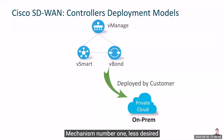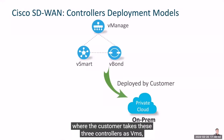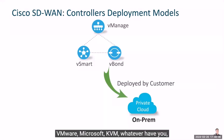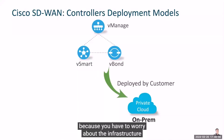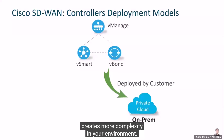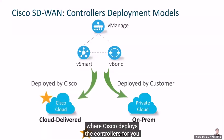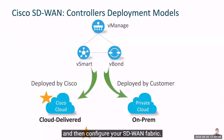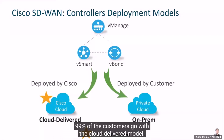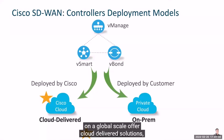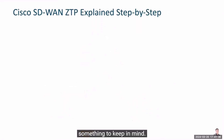There are two deployment mechanisms. The less-desired option is the on-premises controller model, where you run the three controllers as VMs using a hypervisor of your choice — VMware, Microsoft, or KVM. This is not recommended because you have to worry about infrastructure, memory, and redundancy, which creates more complexity. What's recommended is the cloud-delivered model, where Cisco deploys the controllers for you and all you do is log in to V-Manage and configure your SD-WAN fabric. 99% of customers go with the cloud-delivered model.